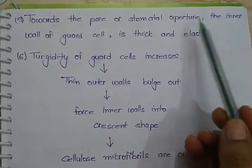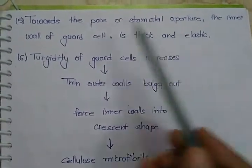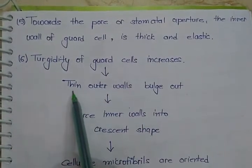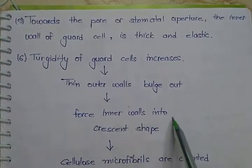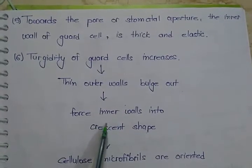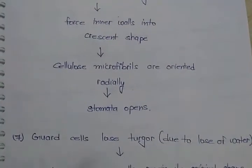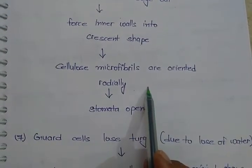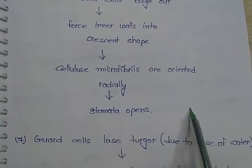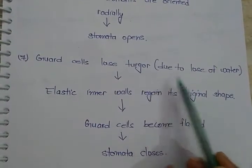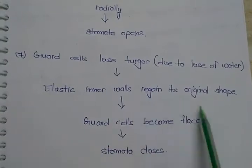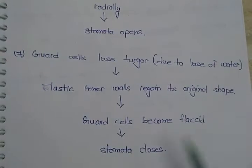Towards the pore or the stomatal aperture, the inner wall of the guard cell is thick and elastic. When turgidity of guard cell increases, the thin outer wall bulges out, forcing the inner wall into a crescent shape, which causes cellulose microfibrils to be radially arranged, causing stomata to open. When guard cells lose turgidity due to loss of water, the elastic inner wall regains its original shape, guard cells become flaccid, and stomata closes.